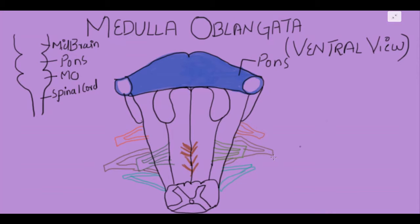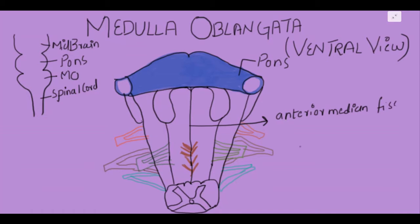If we look from the ventral side, the first thing we see is a fissure right here, and we call it the anterior median fissure.